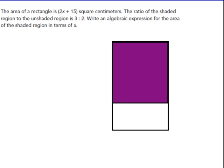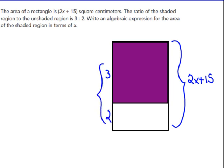The area of a rectangle is 2X plus 15 square centimeters. The ratio of the shaded region to the unshaded region is 3 to 2. Write an algebraic expression for the area of the shaded region. The ratio of the shaded region to the unshaded region, this is a 3 to 2 ratio. Well, 3 and 2, the whole thing, that means that this is like being divided into 5 parts. So if I was to do that, maybe they're not coming out equal parts here, but 1, 2, 3, 4, and 5. There's a total of 5 parts there.